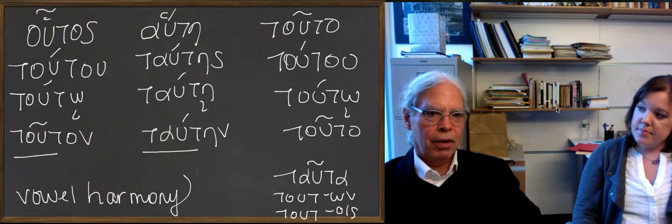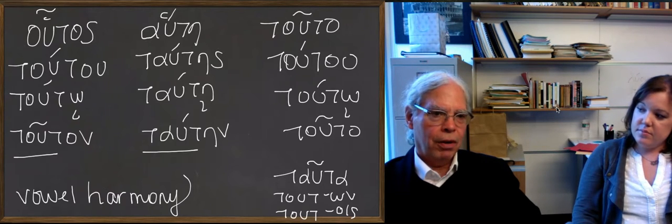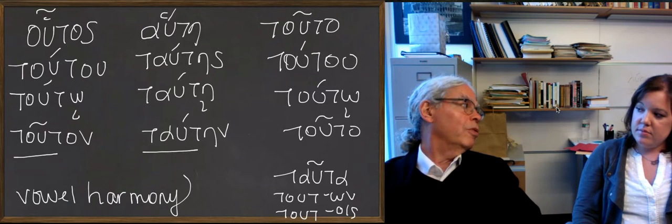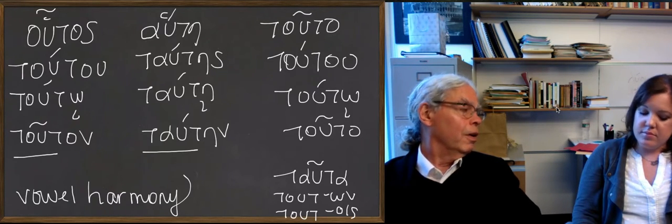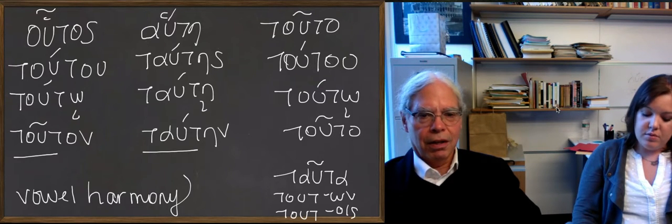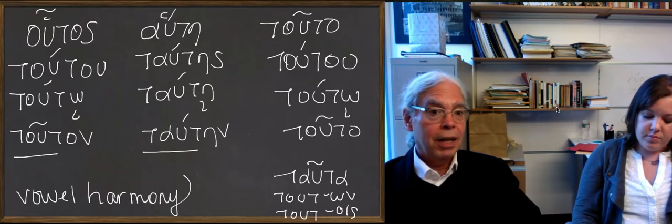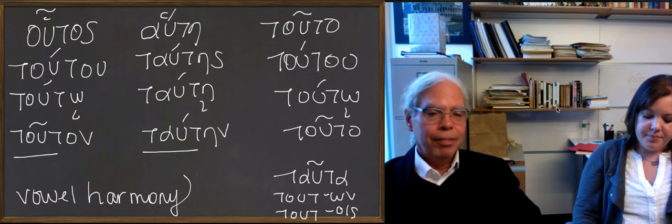And the way to express the rule about how you change the stem of houtos, hautē, touto is this. When the ending has an omicron, an omega, an omicron, an upsilon in it, the stem is t-o-u-t. When the ending has an alpha or an eta in it, the stem is t-a-u-t.